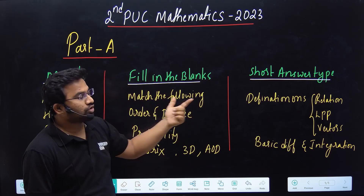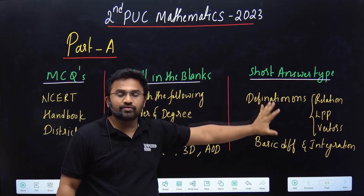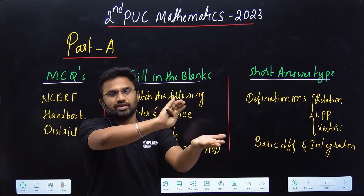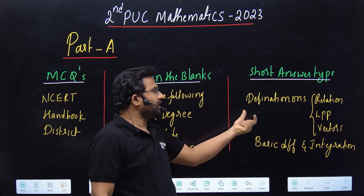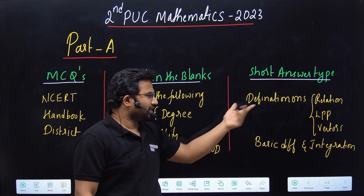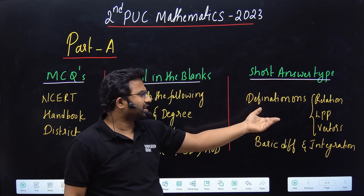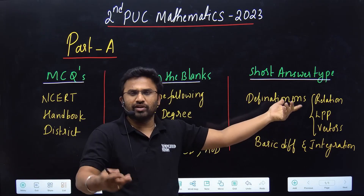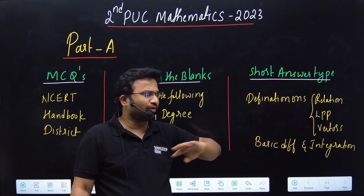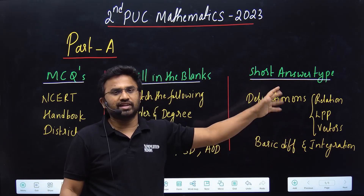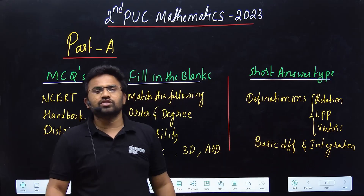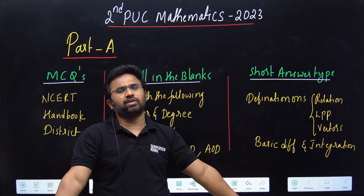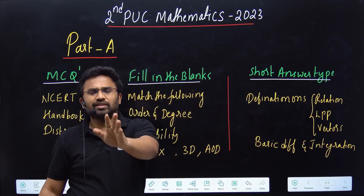Short answer type is very, very easy. Previous year PYQs — the questions that come are just for five marks. The good thing is that definitions are very important: what is bijective, injective, one-to-one, onto, or binary operations — those definitions you should know well. Vectors definitions you can also study. Basic integration and basic definition questions come in the short answer section. Just referring to PYQs alone is almost enough for this section.